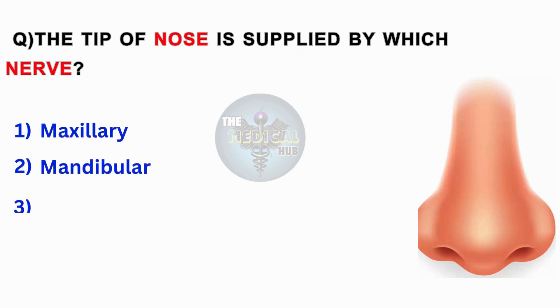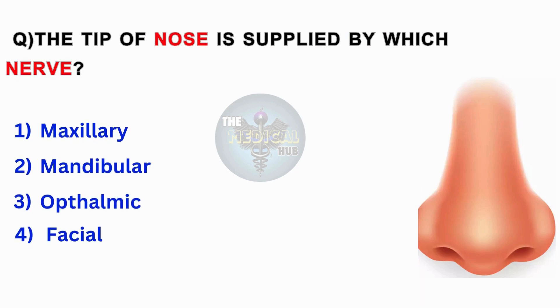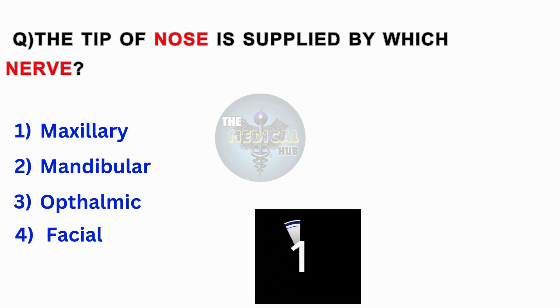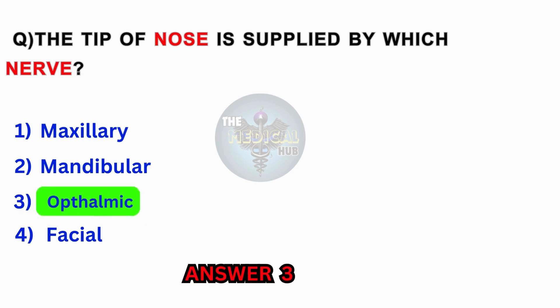The tip of the nose is supplied by which nerve? Maxillary, mandibular, ophthalmic, facial. Answer 3: Ophthalmic.